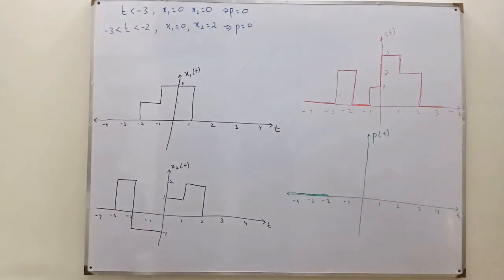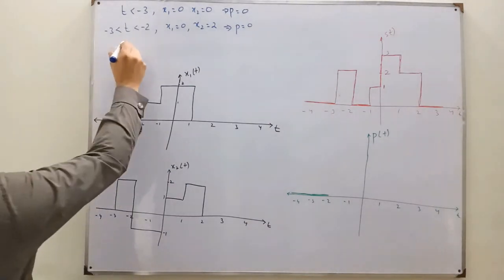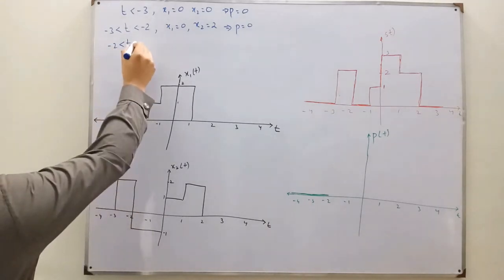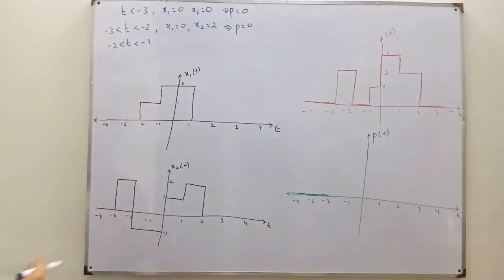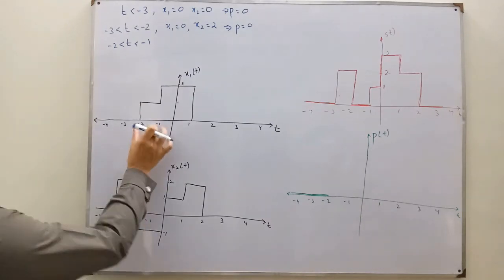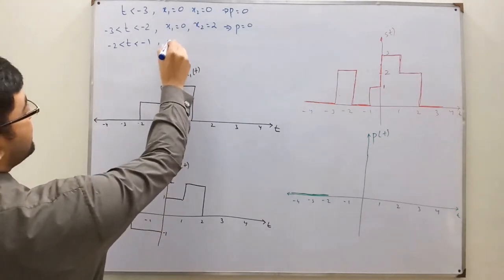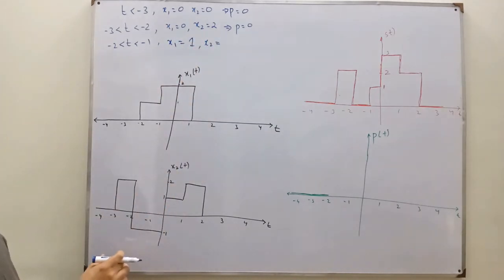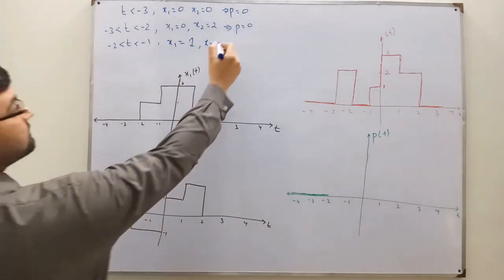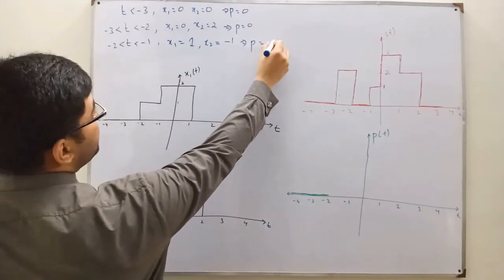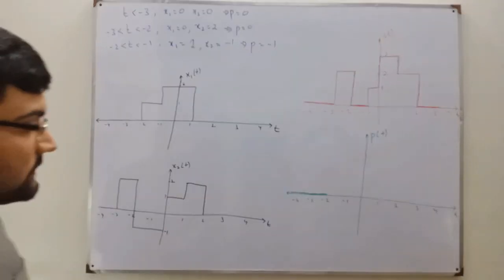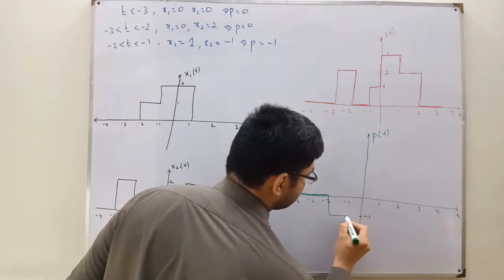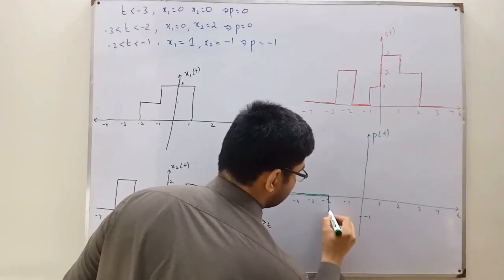From negative 2 to negative 1: when t is greater than negative 2 and less than negative 1, x1 is 1 and x2 is negative 1. So the product would be negative 1. In this particular interval it will come to negative 1.